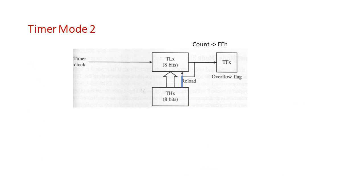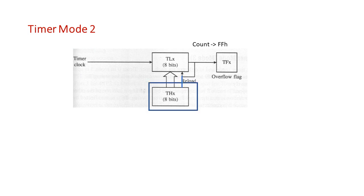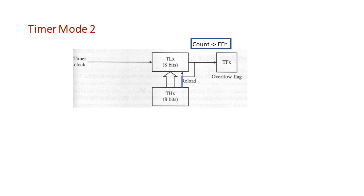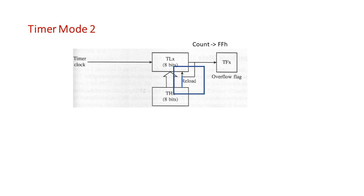Let us understand the operation of Timer Mode 2 using a block diagram. The crystal clock is divided by 12 and used as the timer clock. The user loads an 8-bit count in the TH register, which is automatically loaded into the TL register. When the timer starts, the count in TL increments; when it reaches FFH, the overflow flag is set to 1 and the count in TH is reloaded into TL, starting the operation again.